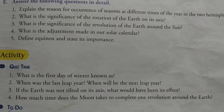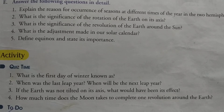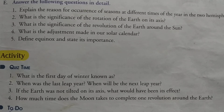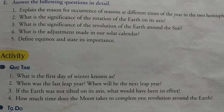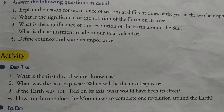Leave one line and write the next question. Question number four: What is the adjustment made in our solar calendar? Question mark. Now come to the next line, write the answer. The Earth takes 365 and one-fourth days to complete one revolution around the Sun. Full stop.